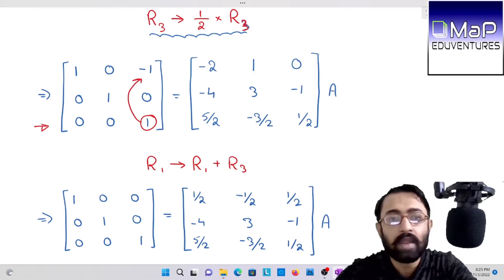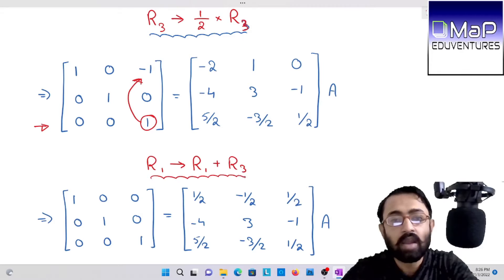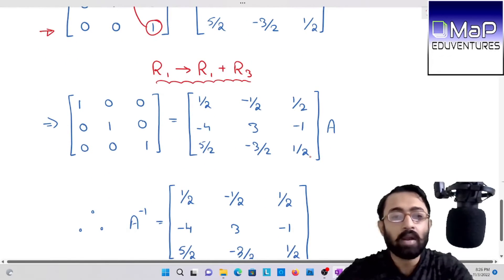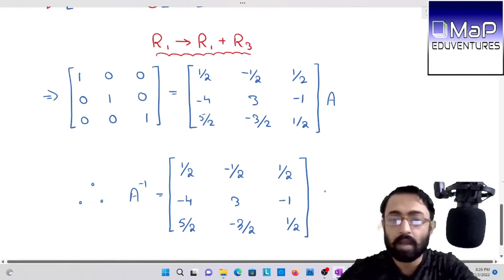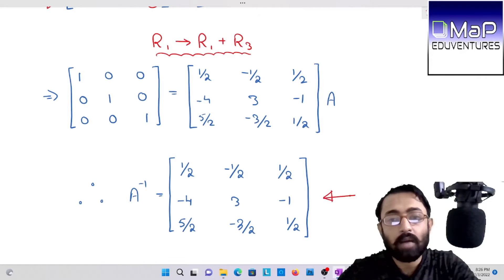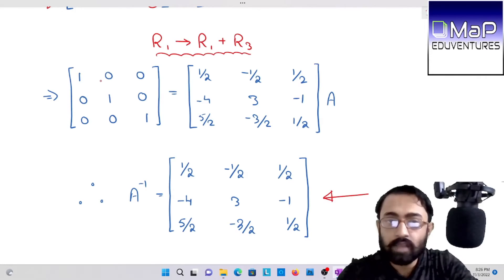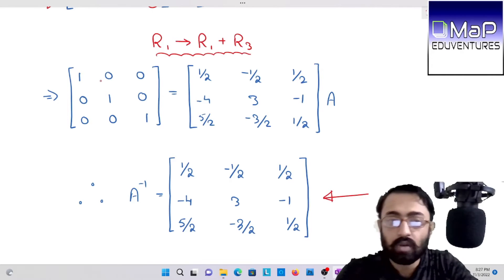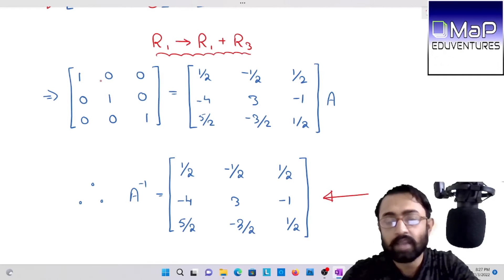Now the final step is to make A13 zero, and it can be very easily done if we add R1 with R3. And in that way we get our inverse finally. The left hand side matrix, which was to become the identity matrix, that procedure we followed.